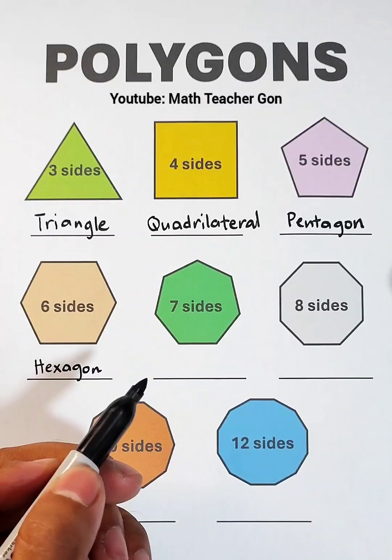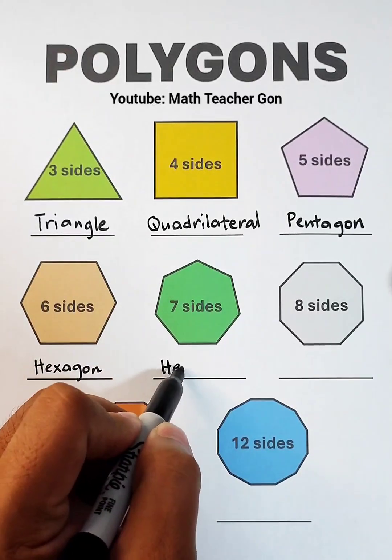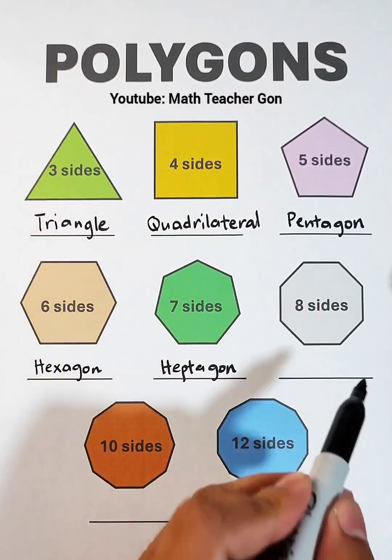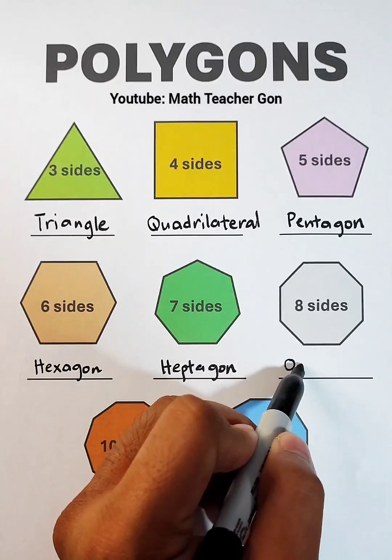The polygon with seven sides is simply the heptagon. Next, is the polygon with eight sides, which is commonly known as the octagon.